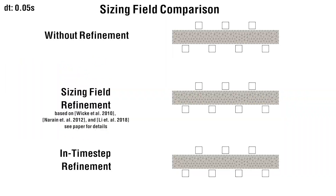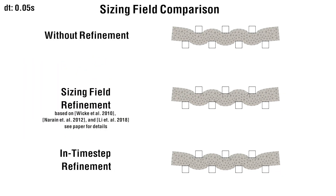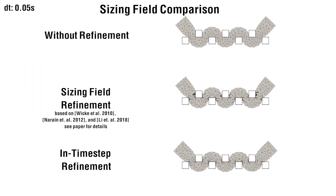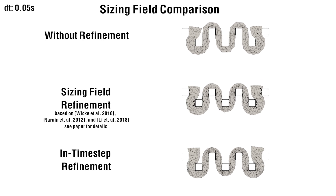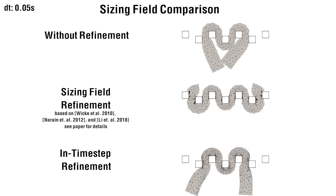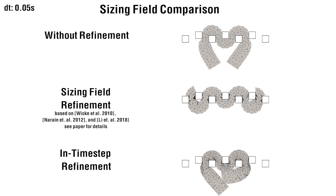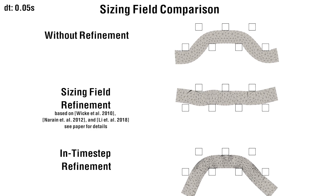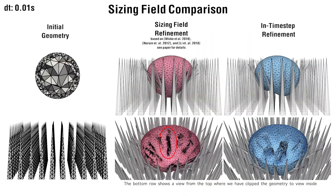Prior geometric-based methods refine depending on the proximity of objects, while our approach refines where it is necessary to better resolve the underlying physical model. In this example, the sizing field approach severely over-refines around the contact, while still failing to capture intricate interactions.